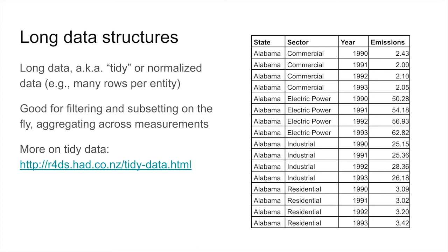Creating a tidy dataset from a crosstab can be called normalizing the data, transposing the data, or unpivoting the data.